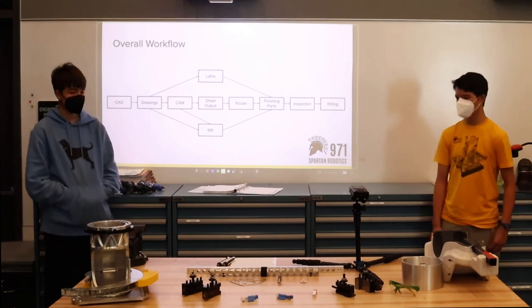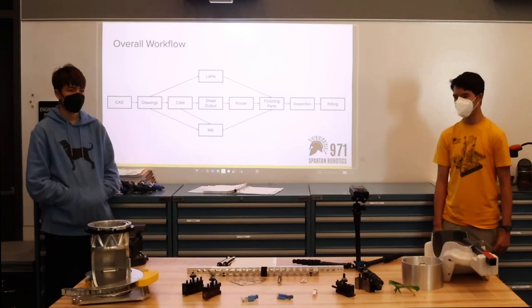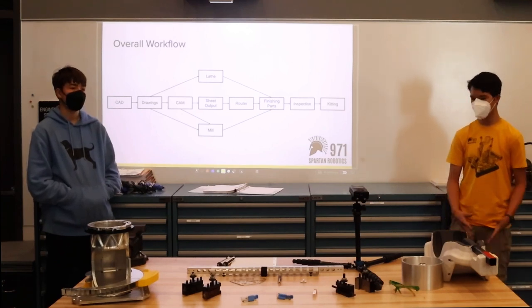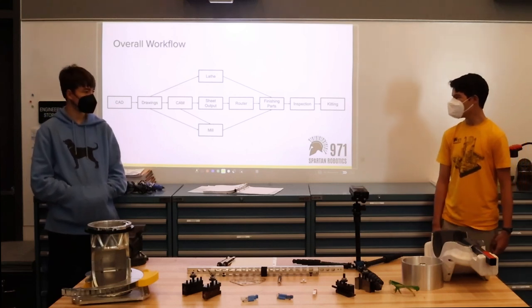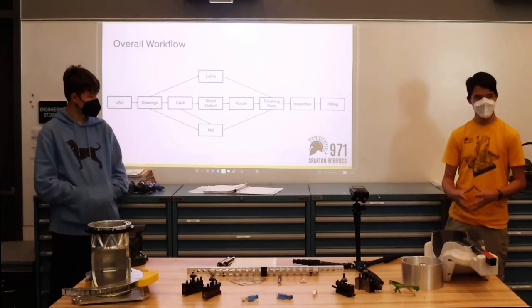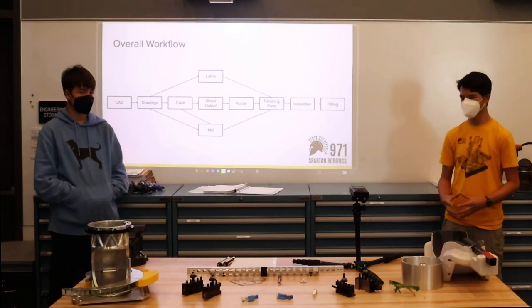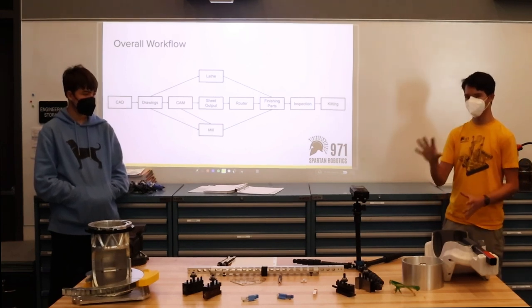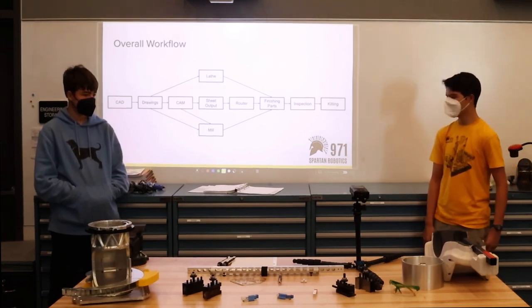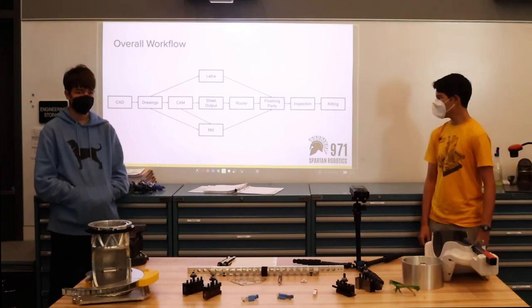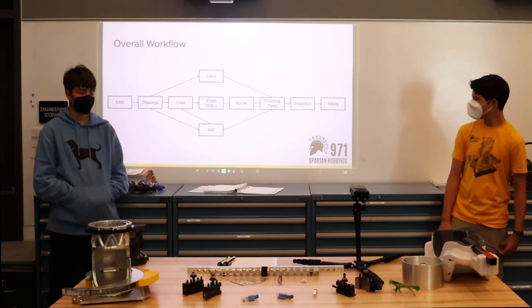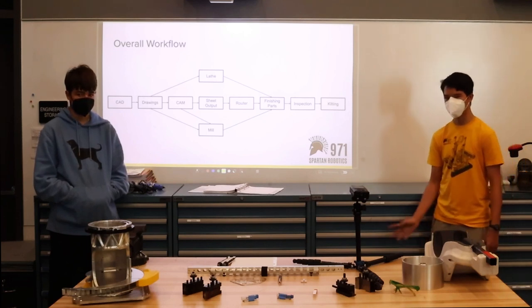So for our router, the next step after a drawing is we do CAM, which we take our CAD and make it into something our router can understand and use to cut. And then once we have that for one part, we use sheet output, which basically combines a bunch of those and reorganizes them into where we want it, and then it outputs one that can cut all of them at once. Then it goes to our router to get cut. And once all the parts are made, we finish them.